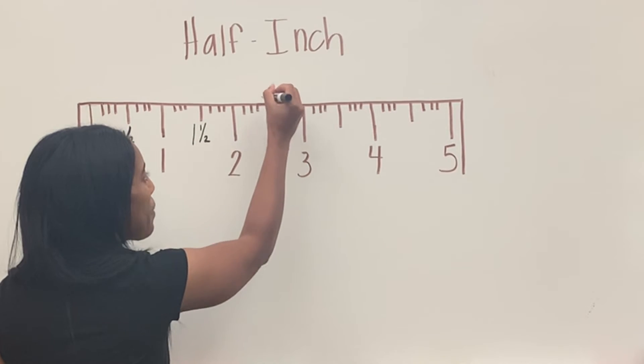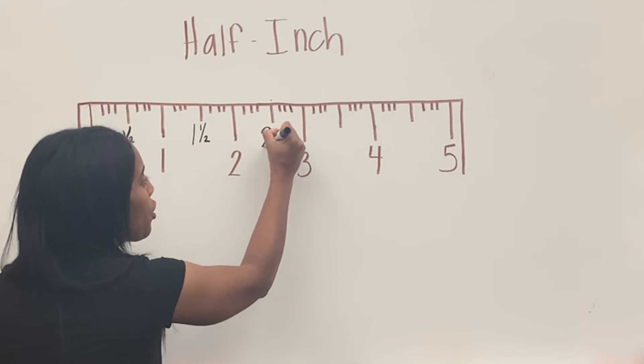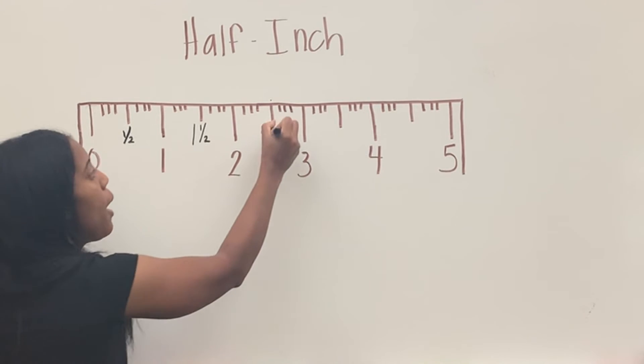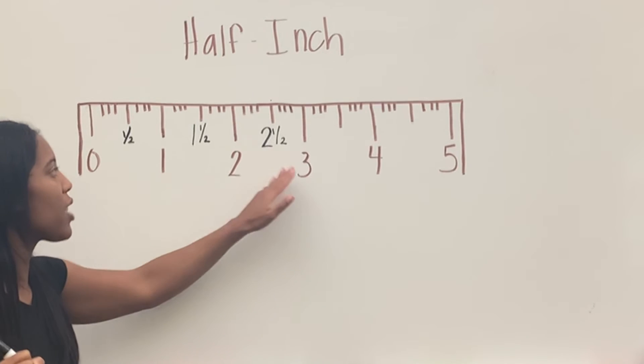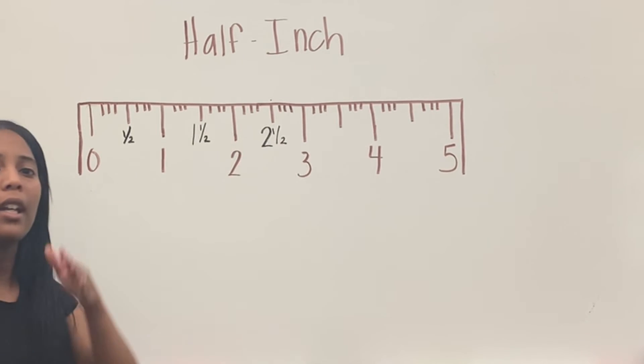So if when you measure your line, it goes past two, but it stops in the middle of two and three, you say it's two full inches, but then it's a half of two after that. It's not all the way to three just yet. It's two and a half inches.